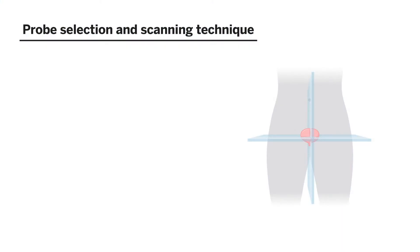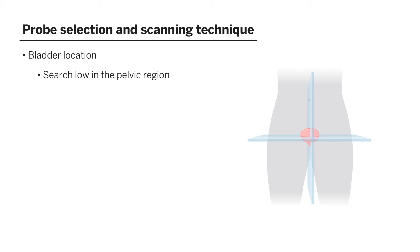We're going to start out by talking about probe selection and scanning techniques. It's a pelvic organ, and it's always lower than you think it's going to be, so just brief the patient. Oftentimes junior learners start scanning around the belly button, but unless the bladder is very distended, you're going to come up short. So you just have to tell the patient that you're going to be scanning down by their pelvis.